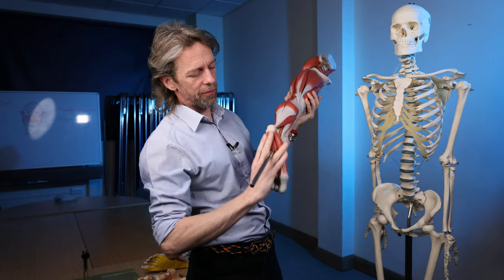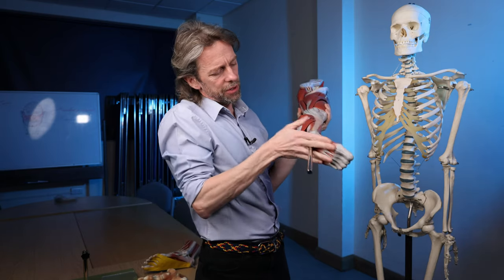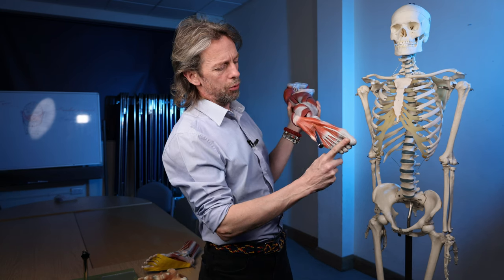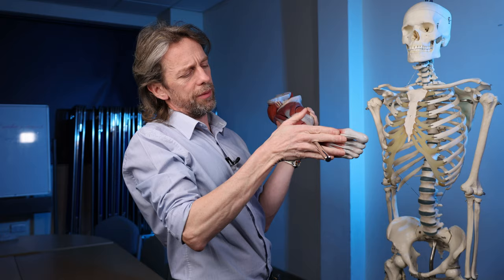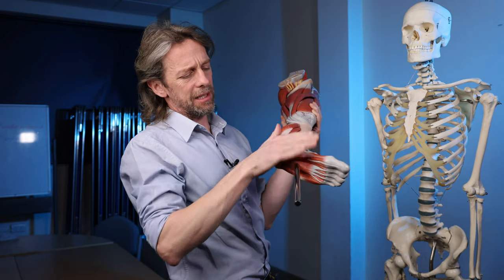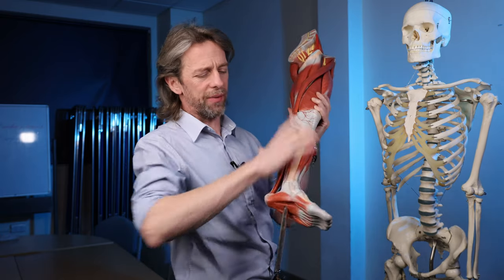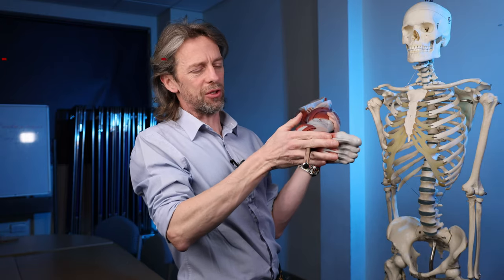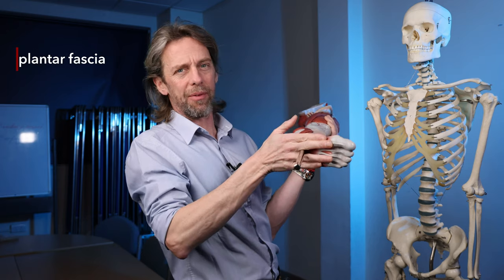The sole of the foot there's a structure down here that runs from the heel to the toes and it's superficial to all of these muscles and it's largely continuous with the fascia that we see elsewhere in the lower limb. So being on the plantar surface of the foot it gets called plantar fascia.